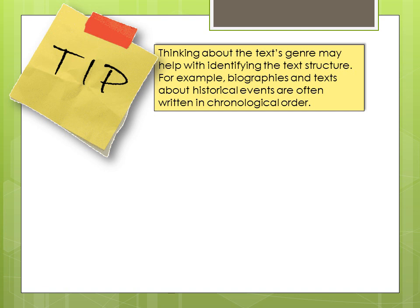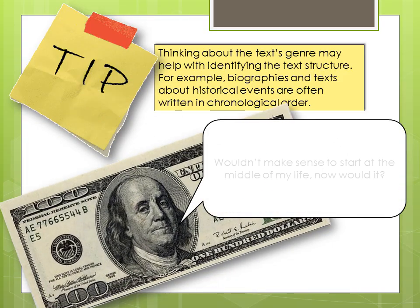Here's a tip. Thinking about the text's genre may help identifying the text structure. For example, biographies and texts written about historical events are often written in chronological order. This helps the reader understand the sequence of events in a person's life or a historical event. Wouldn't make sense to start from the middle of my life now, would it?